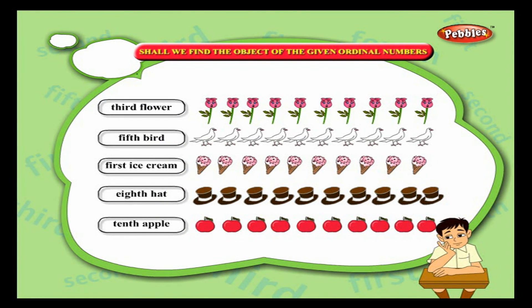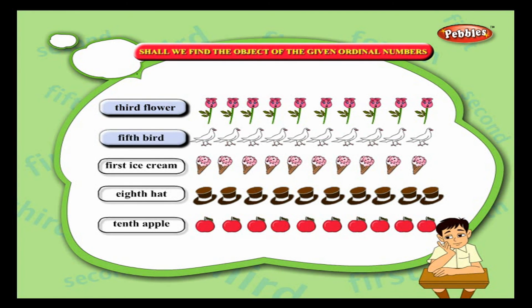Find the third flower. Find out the third flower in this row. Start counting: first, second, third — this is the third flower. Fifth bird: let us find the fifth bird. Start counting: first, second, third, fourth, fifth — this is the fifth bird.